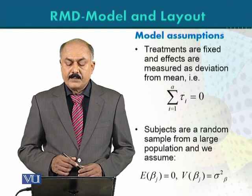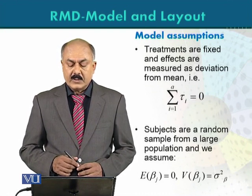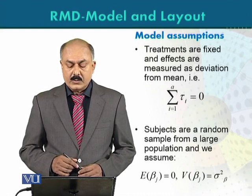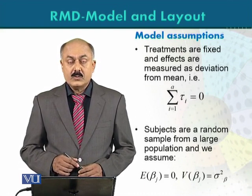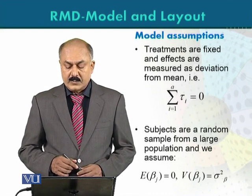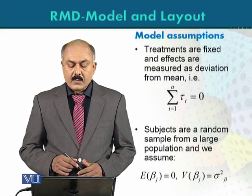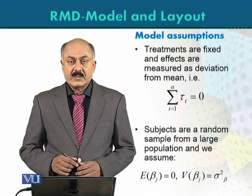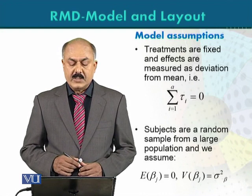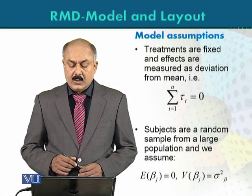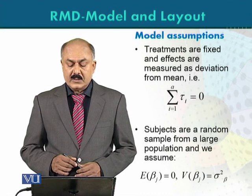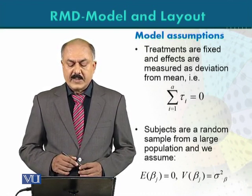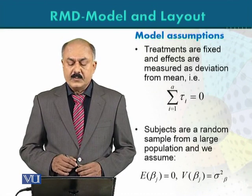Subjects are a random sample from a large population. We assume the expected value of b_j equals 0, and the variance of b_j equals sigma-squared with a subscript beta. The effects of subjects are randomly chosen — they are not fixed. Since the subject effect is random, both its expected value and variance are defined: the expected value is 0 and the variance is fixed as sigma²_beta.